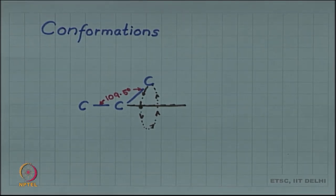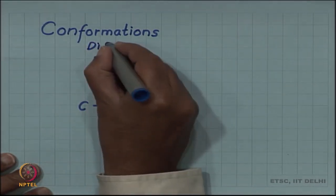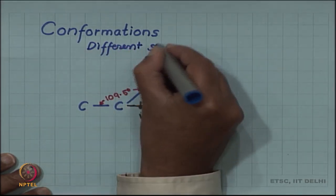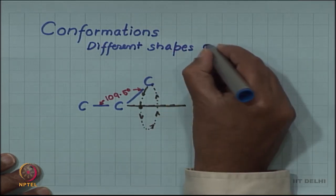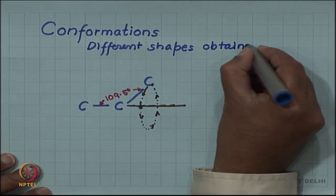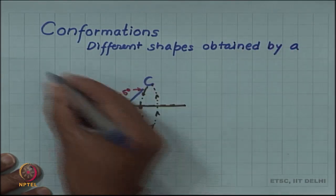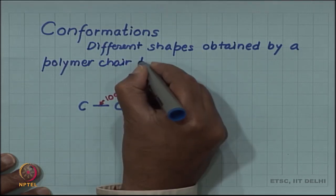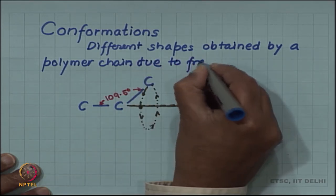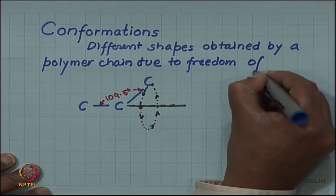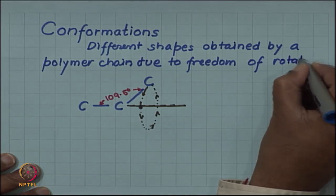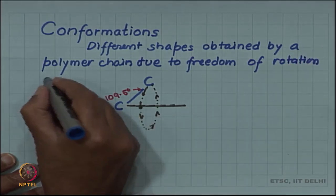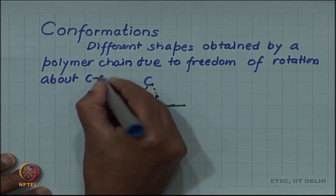These different shapes are called conformations. Conformations are different shapes obtained by a polymer chain due to freedom of rotation about the carbon-carbon bond.